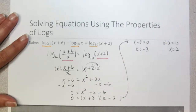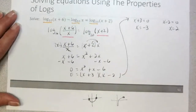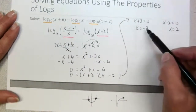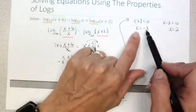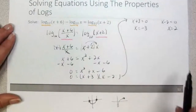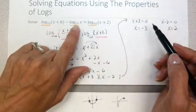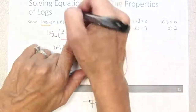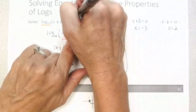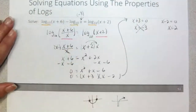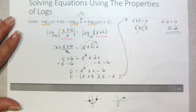Let's check these values against the domain. If x is negative 3, negative values are suspicious for logarithm arguments. Negative 3 plus 6 is positive 3, so the first expression is fine. But the second expression has an argument of just x, which would be negative 3 — that is not allowed for a logarithm. So negative 3 is an extraneous solution and we throw it out. The only valid solution is x equals 2.